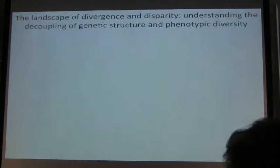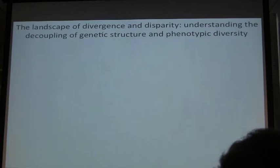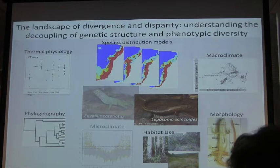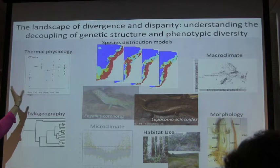The first chapter looks at how genetic divergence and phenotypic disparity correlate — whether they're coupled or decoupled — and how the landscape can help us understand why. I'm going to talk about Leposoma cinchoidus and look at species distribution modeling, phylogeography, thermal physiology, habitat, morphology, and microclimate.